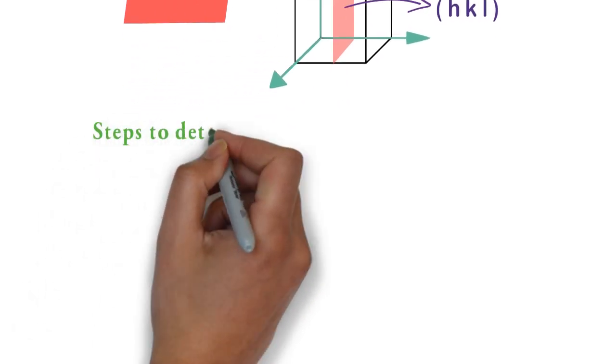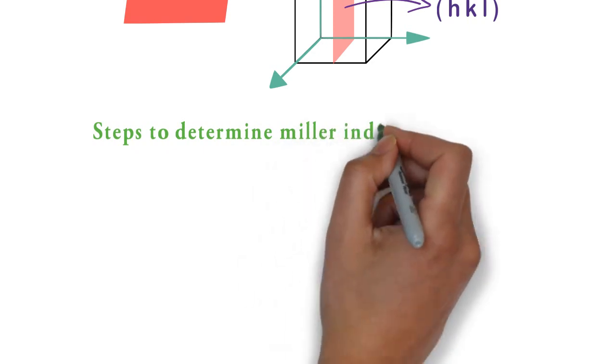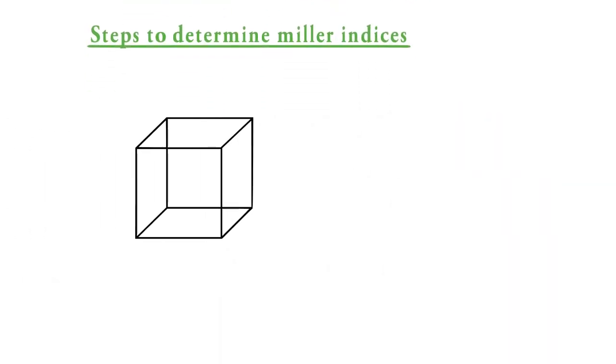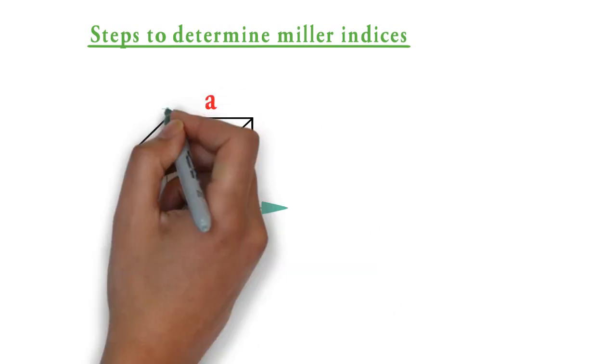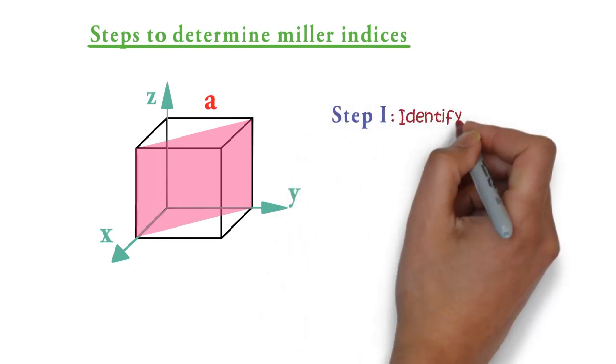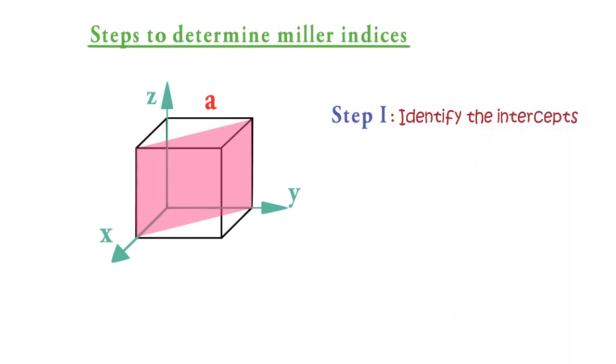Now let's see how we can determine the values of Miller Indices for a given plane. Let's say we have a cubical unit cell of edge length a. Let's show all three rectangular axes here, and we have a plane like this which cuts the unit cell in two equal parts diagonally. So to find the Miller Indices of this plane, at first we will identify the intercepts of this plane on the three axes.